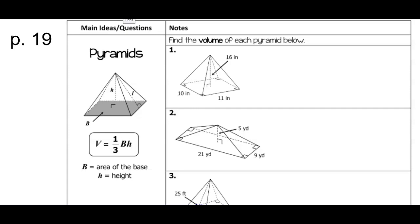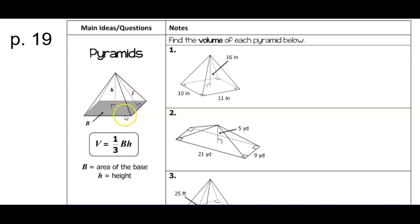This lesson will build on what we did previously with prisms and cylinders. We're going to take those and instead of having parallel bases, have them go to a point. In this pyramid, we have a square base with a triangle coming from each of the four segments on the square, and those triangles build to a point at the top. That's the property of a pyramid — a triangle coming from each side of the bottom.